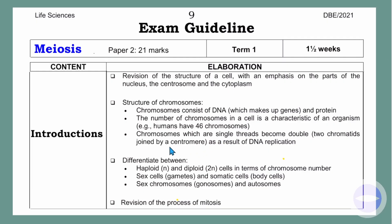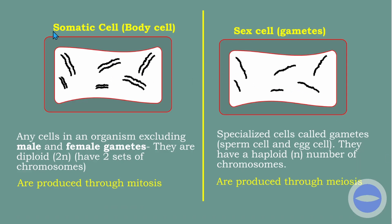You must be able to differentiate between haploid and diploid cells in terms of chromosome number. Somatic cells are body cells found throughout our body. Sex cells are only found in our sex organs — in males the testes, in females the ovum. Any cell in an organism excluding male and female gametes is diploid — they have two sets of chromosomes, one from the father and one from the mother.